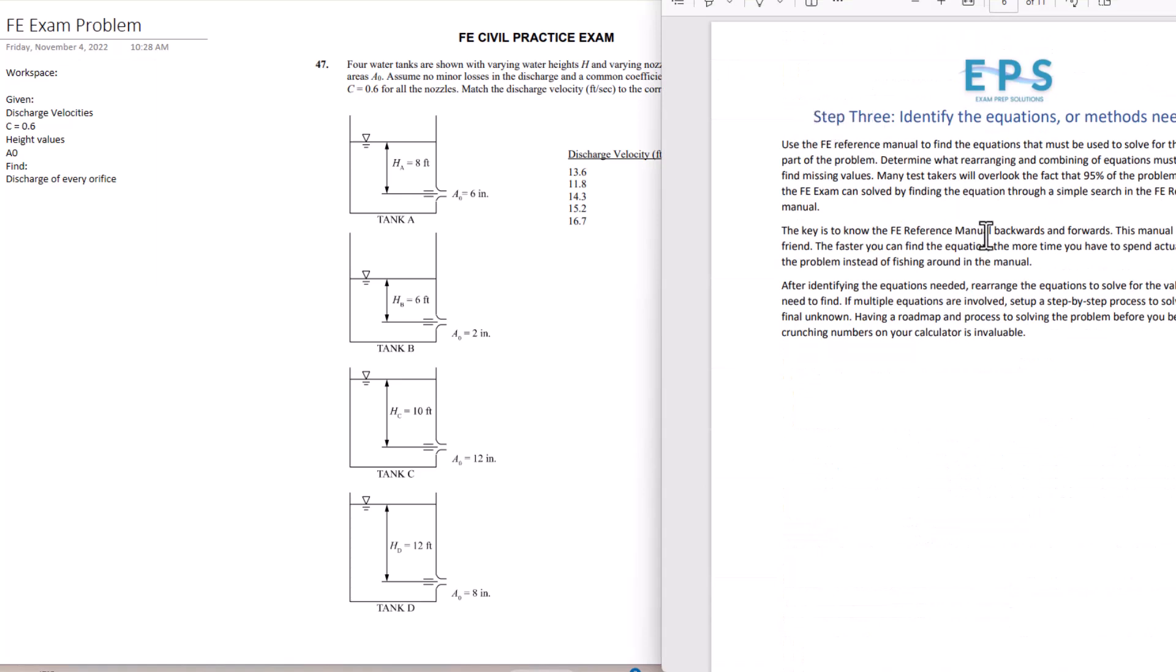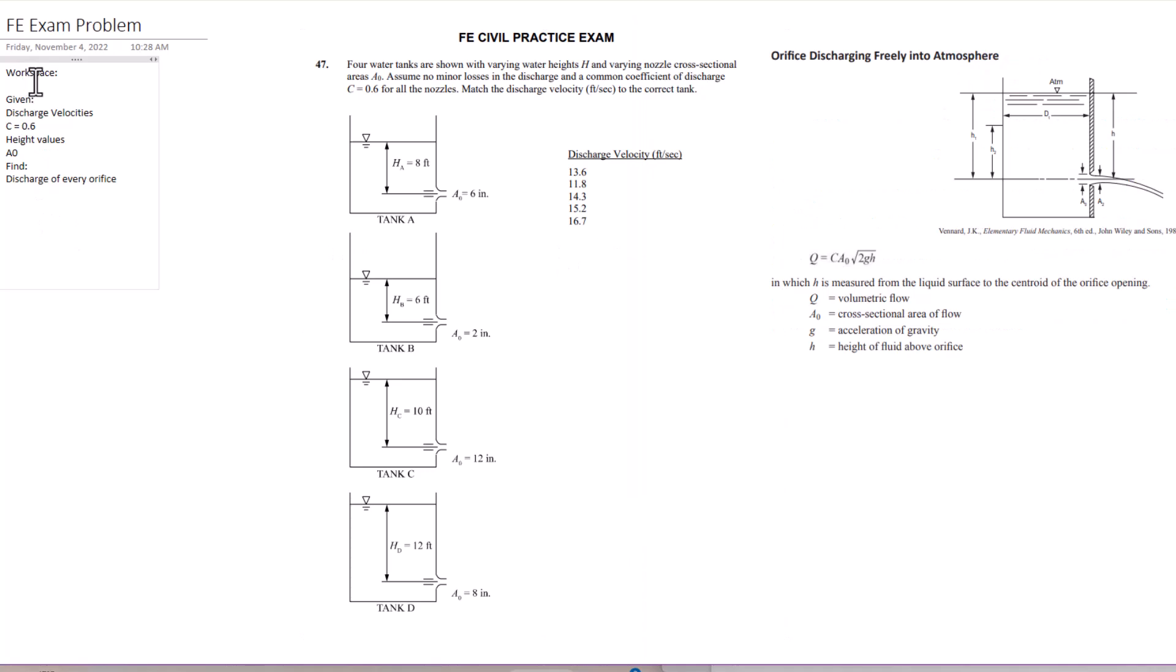Step three: identify the equations or methods needed. So step one we read the problem, for step two we write out given and find statements. Now for step three we're going to find the pertinent equations. I've looked in the FE manual, so find important equations. I looked in the FE manual using the keywords for minor losses. This is what came up. The important equation we're going to use, it looks like we just need one: Q equals C A naught times the square root of 2GH. That's what we've got there. That's the equation we're going to use.